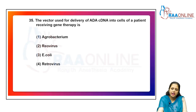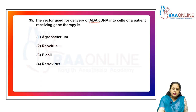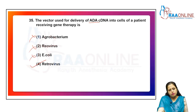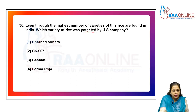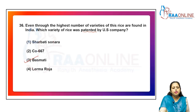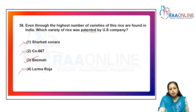The vector used for delivery of ADA cDNA into cells of a patient receiving gene therapy is a retrovirus — not Agrobacterium, reovirus, or E. coli. Even though the highest number of rice varieties are found in India, the variety of rice patented by a U.S. company is basmati — option 3. It is not related to Sherbati Sonora, Co67, or Larma Rosa.